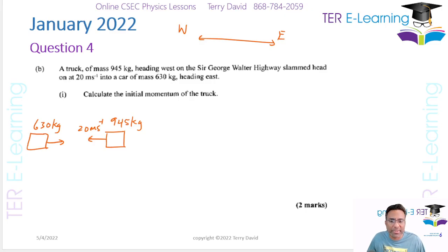Now, the first part of the question, they want us to work out the initial momentum of the truck. So we're going to use P is equal to M multiplied by V, and your mass of the truck is 945. Now, whenever we are dealing with momentum questions, we usually use a sign convention. So what I normally do, anything traveling eastward, I take it as positive, and anything traveling west, I take it as negative.